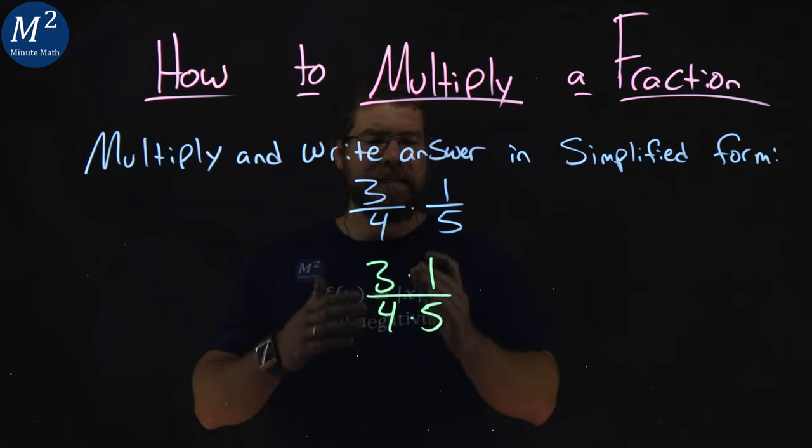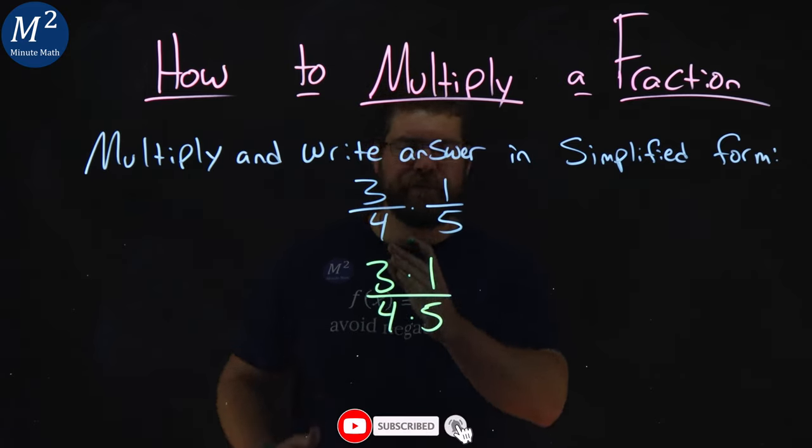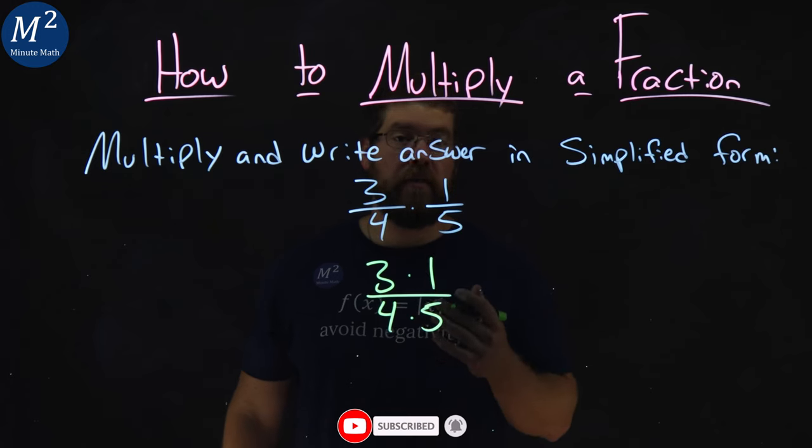Now from here, I try to see if anything can be crossed off. 3, 4, 5, 1 - no common factor is really there at all.